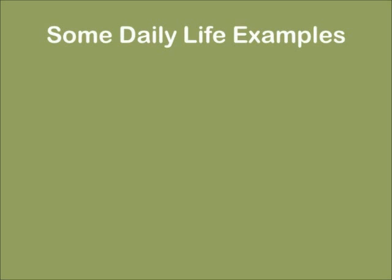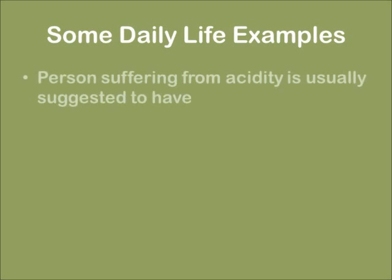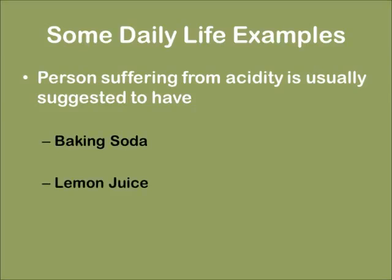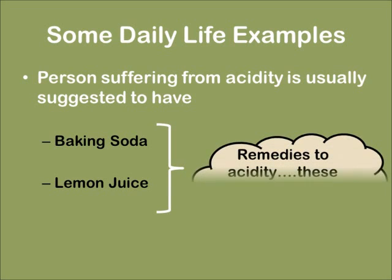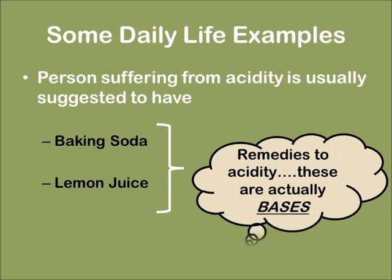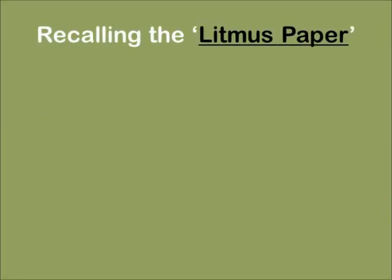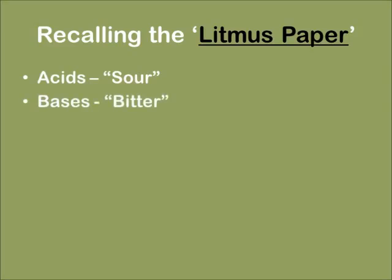Some of the daily life examples are: consider a person suffering from acidity. He is usually suggested to have baking soda and lemon juice, which are a remedy to acidity — these are actually bases. Recalling the litmus paper studied in class 9, we know that acids are sour and bases are bitter.